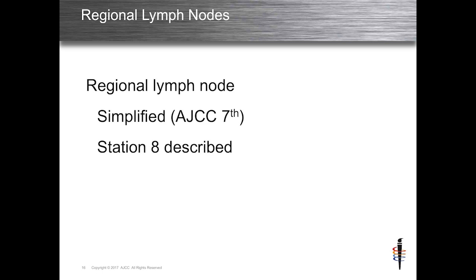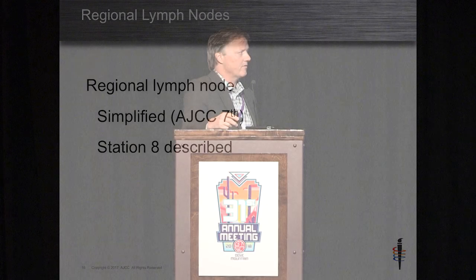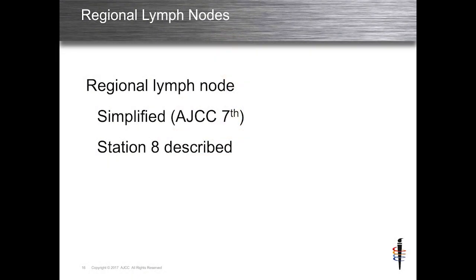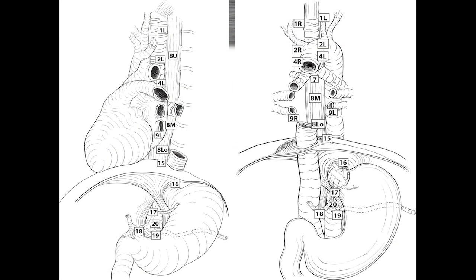Regional lymph nodes were nicely simplified from AJCC 6 to 7. It used to be based on location of the tumor, which was very difficult to understand and generated a lot of misunderstanding in the literature. Finally in 7, Tom Rice and Blackstone looked at all regional lymph nodes and said everything periesophageal — basically supraclavicular down to the celiac node — was considered regional, regardless of tumor location. For the 8th edition, level 8 periesophageal lymph nodes were further delineated into 8 upper, 8 middle, and 8 lower.